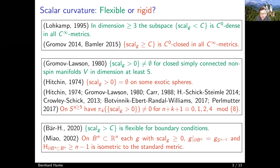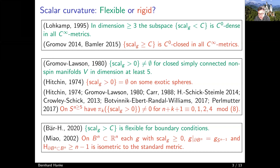We also have a result bearing many names — Hitchin, Gromov, Lawson, Carr, myself, Schick, Steimle, Crowley-Schick, Botvinnik, Ebert–Randall-Williams, Perlmutter — giving a conclusive result about the non-triviality of higher homotopy groups π_k of the space of positive scalar curvature metrics on the n-sphere of dimension at least five. In all dimensions where we have a potential index-theoretic invariant which may be non-trivial, this can be realized on the space of positive scalar curvature metrics, so we have many non-trivial higher homotopy groups of these spaces.